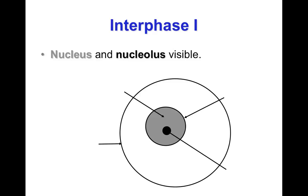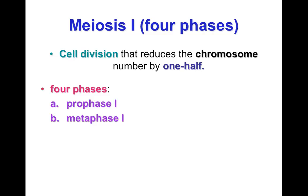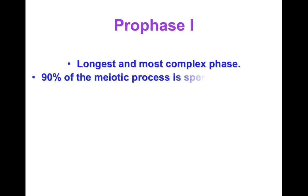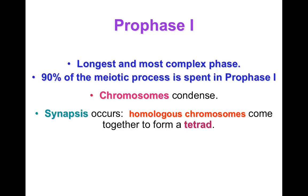During interphase one, we can see the nucleus and the nucleolus. Like in mitosis, the first step of prophase is when the nuclear envelope breaks down. Meiosis one has four phases just like mitosis: prophase one, metaphase one, anaphase one, and telophase one. Things are going to look a little different, and there are going to be some different things happening in prophase one that don't happen in mitosis. This is the longest and most complex phase. Our chromosomes are going to condense before this process — going from chromatid, which is like string, into chromosomes.